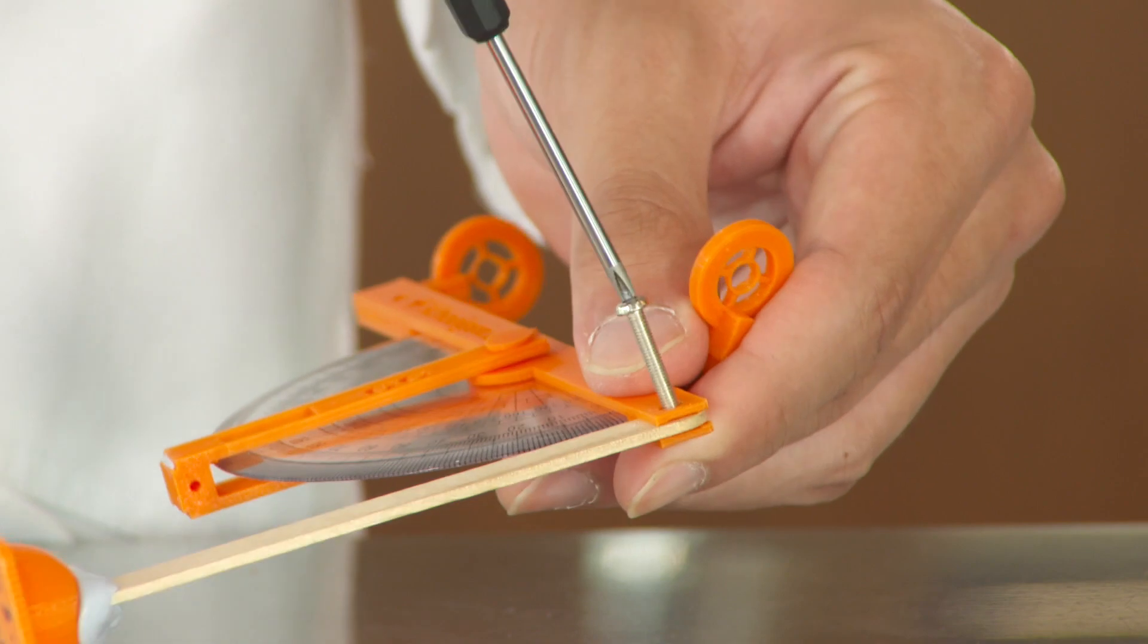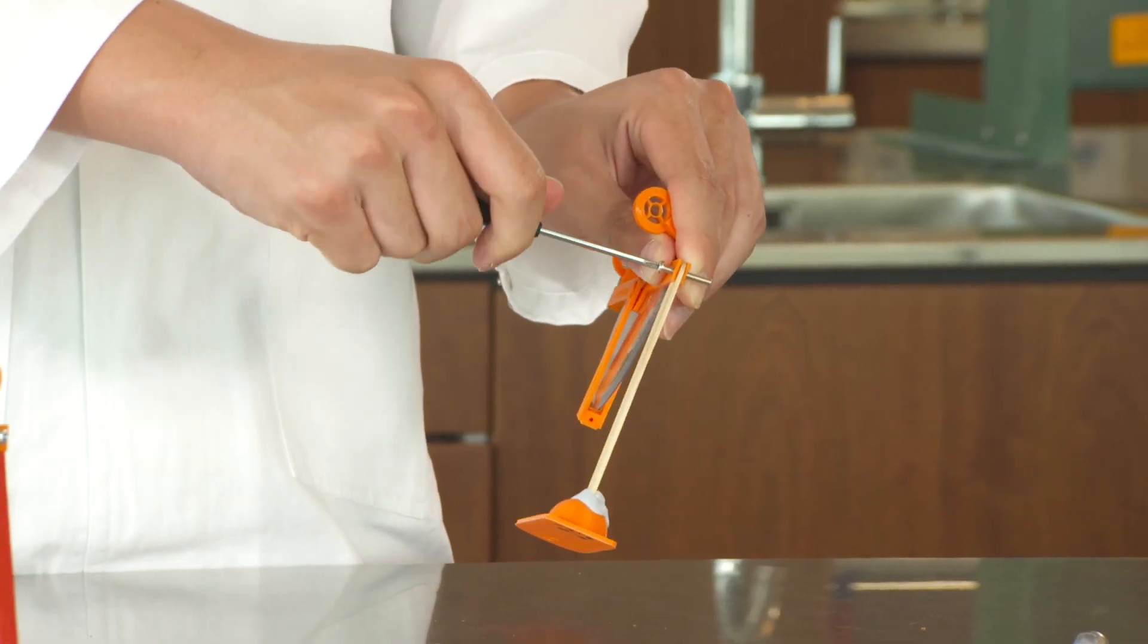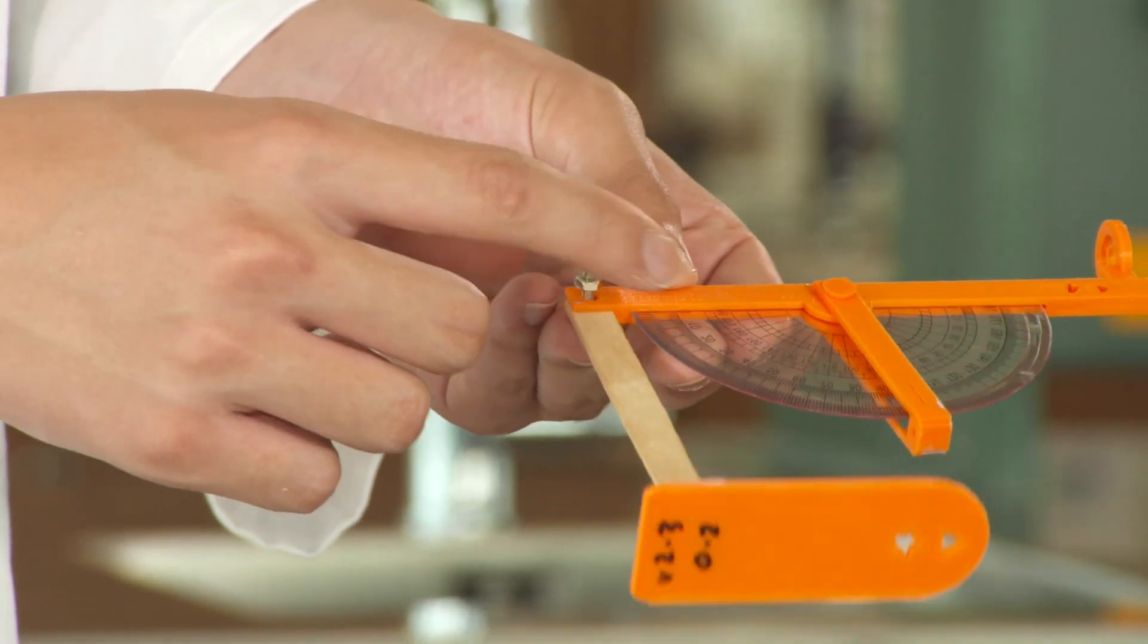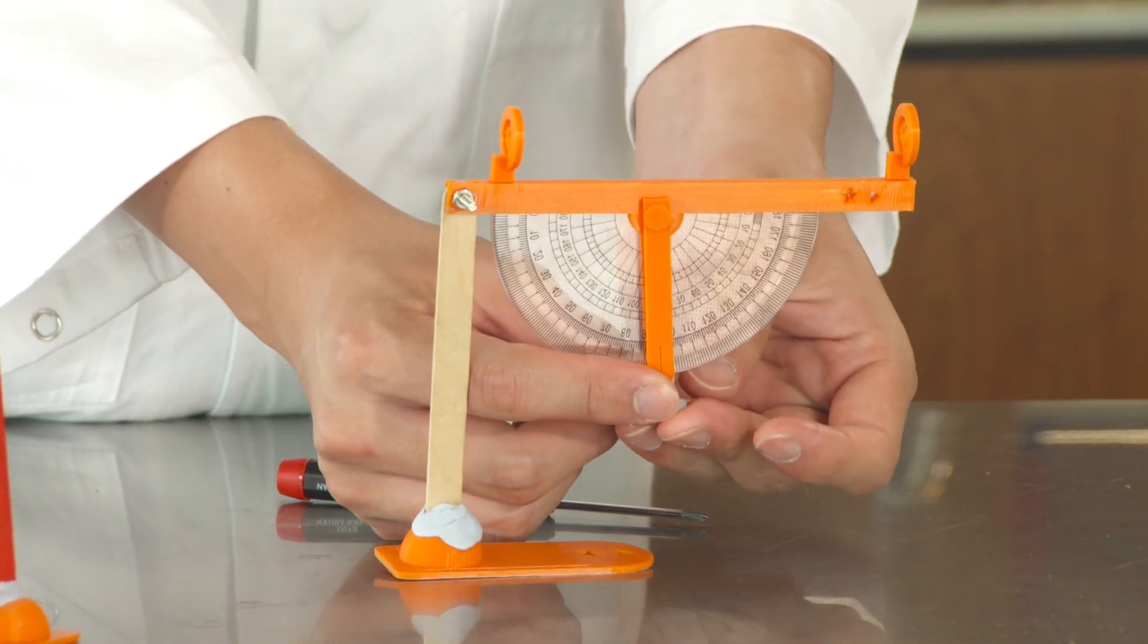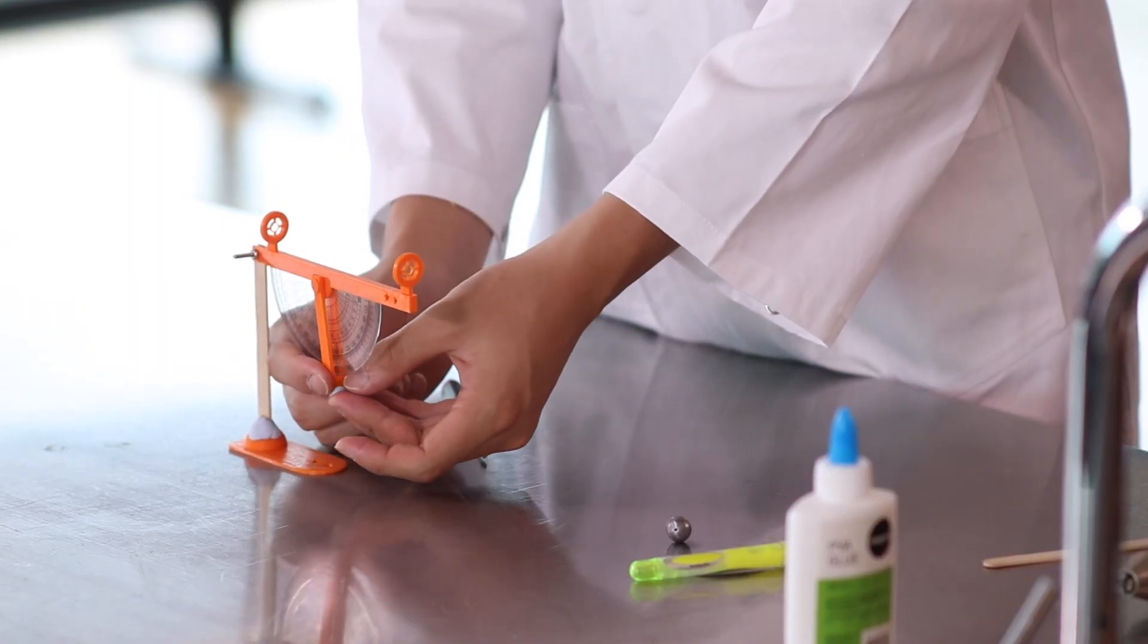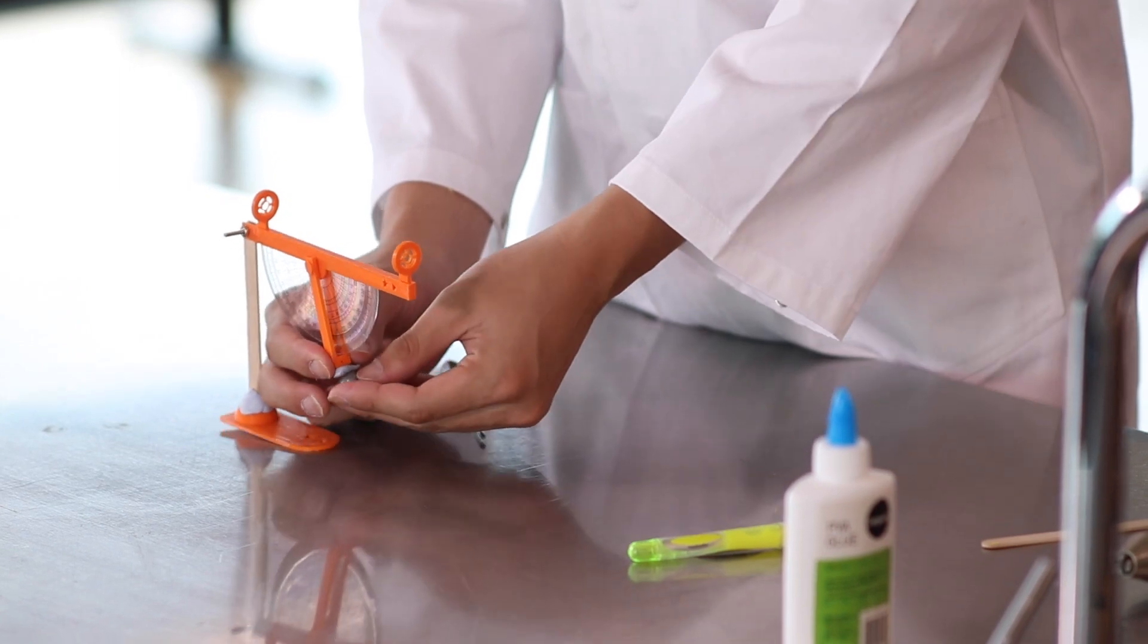You can use a screwdriver to help you tighten it in. Now you assemble the nut onto the bolt like so. Now you just take the second blob of blue tack and place it onto the bottom of the angle measure and then you attach the weight to it.